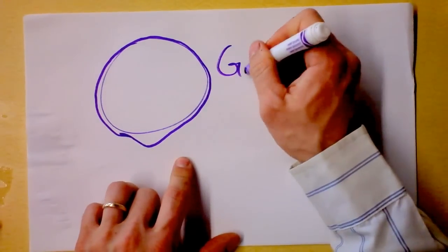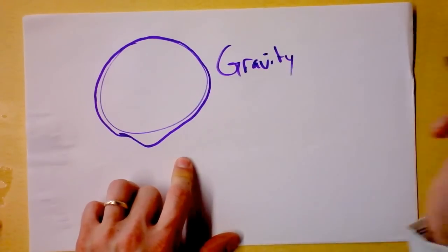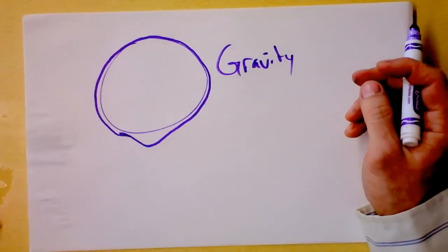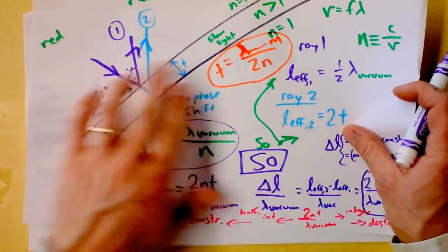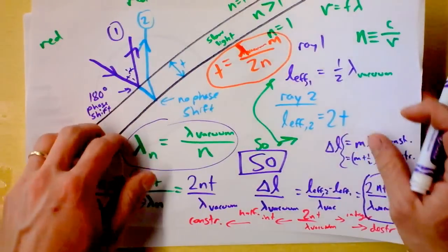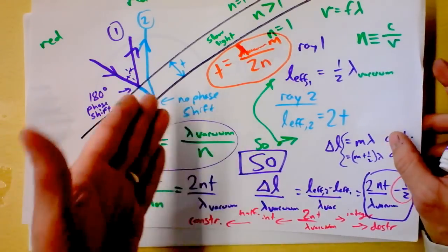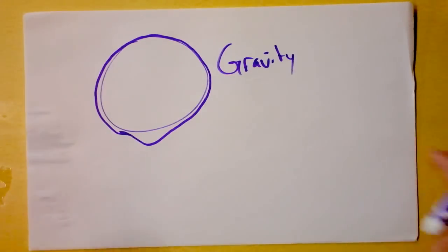Gravity. So gravity is providing the change in thickness that's allowing you to go from letting red be seen to letting blue be seen and going through the entire spectrum of the rainbow, in fact, several times over, which is why bubbles are beautiful. Yay.